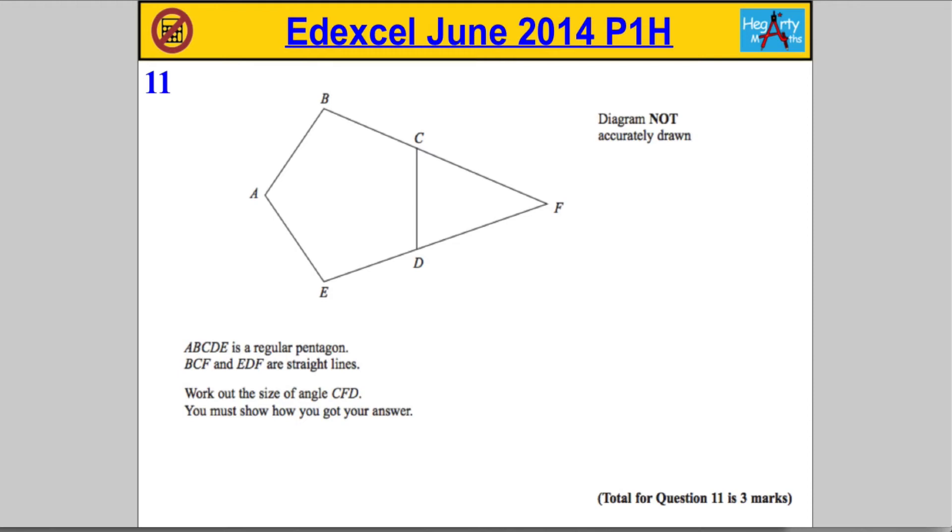Question 11. ABCDE is a regular pentagon. It's an important word, regular. It's telling you that all the sides are the same length. BCF and EDF are straight lines, and we're asked to work out the angle CFD.